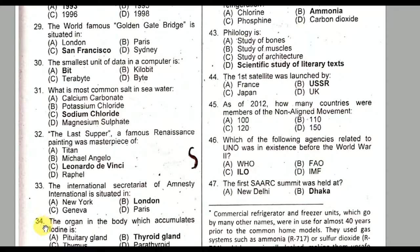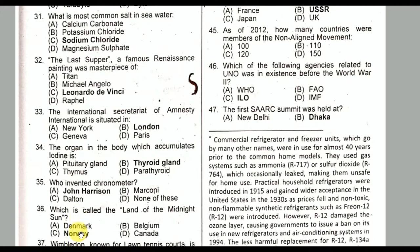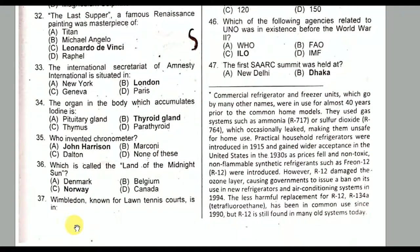Question number thirty-four: The organ in the body which accumulates iodine is the thyroid gland. Option B is the correct option.